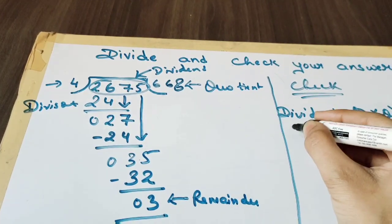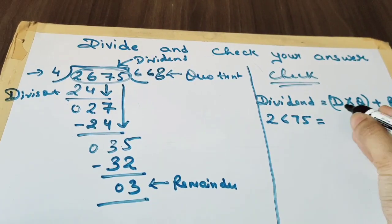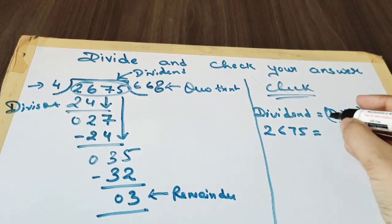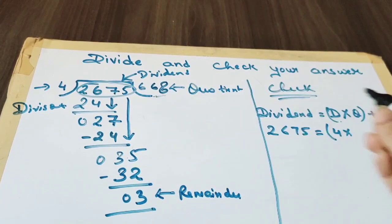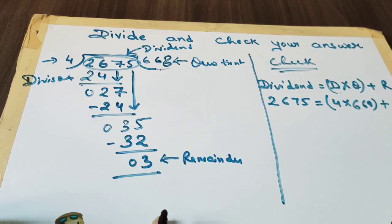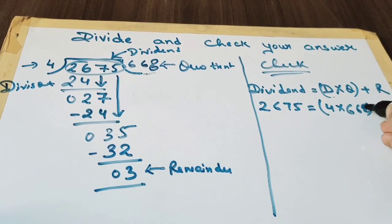That equals to divisor, which is 4, multiplied by quotient 668 plus remainder which is 3. Now let's multiply them together: 4 multiplied by 668.